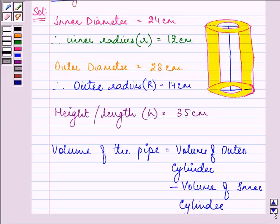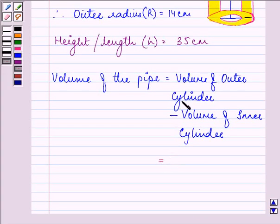So it is equal to volume of the outer cylinder will be π capital R squared H minus volume of the inner cylinder will be π small r squared H.